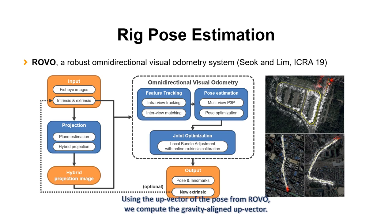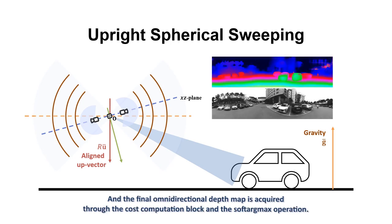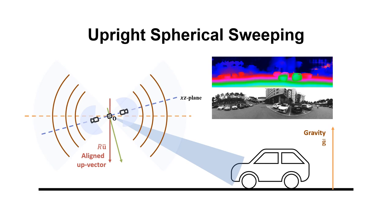Using the up vector of the pose from ROVO, we compute the gravity aligned up vector. With the gravity aligned up vector, we warp the unary features onto the aligned spheres. And the final omnidirectional depth map is acquired through the cost computation block and the soft argmax operation. This successfully generates the upright and stabilized omnidirectional depth and the panorama image.